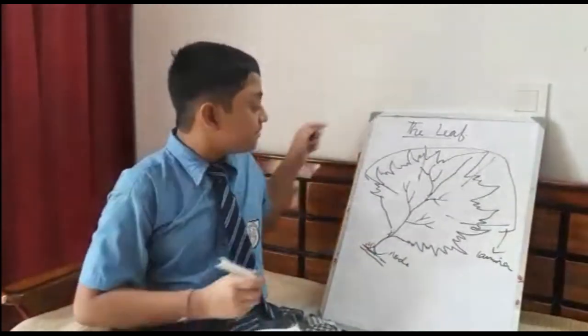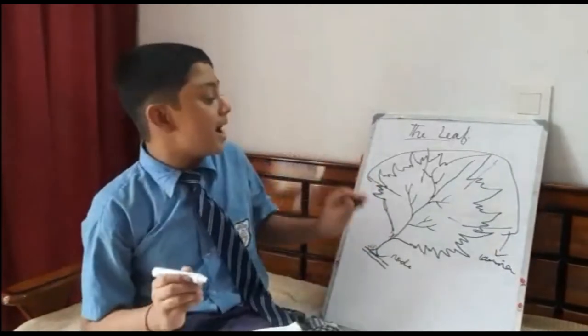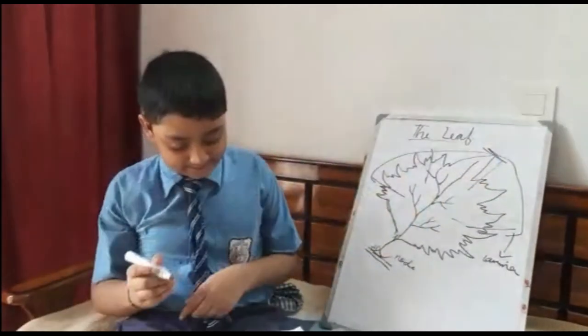The edge of the leaf, you can see the edge of the leaf, is called the margin of the leaf. And the tip of the leaf is called the leaf apex.